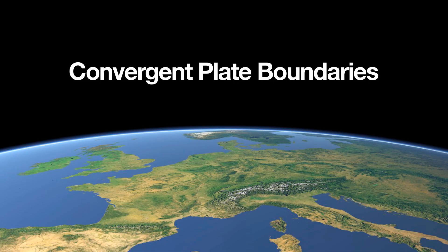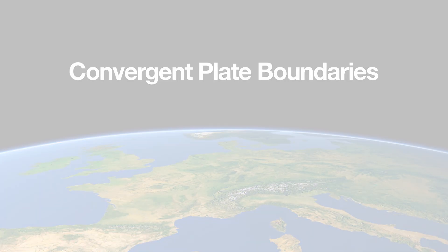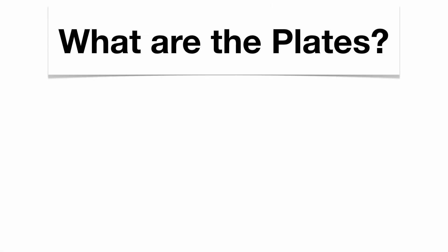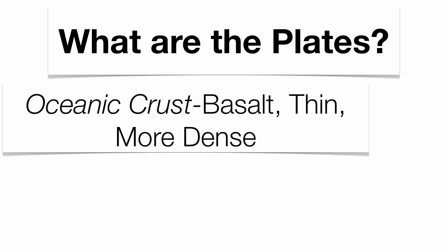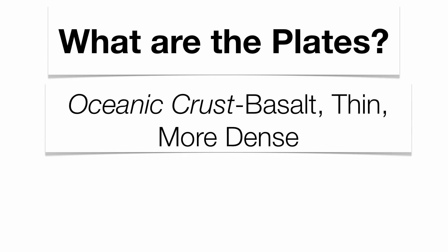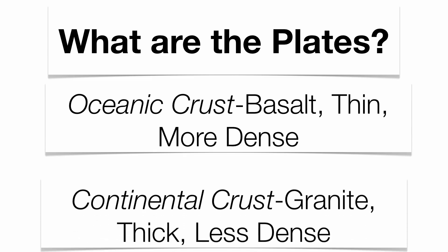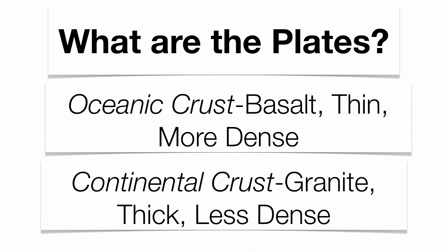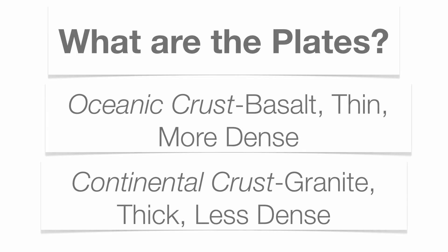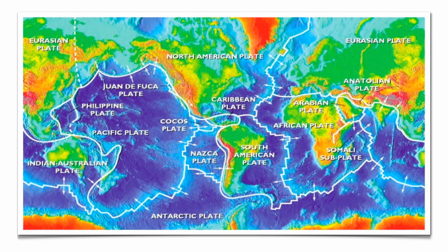In order to understand convergence, we've got to talk a little bit about the crust. Our crust, or our lithosphere, is broken up into different sections called plates. Our plates can either be made up of oceanic crust or continental crust. Please know the difference between the two, because when those two types of crust interact, they're either going to slide side by side, pull apart from each other, or in this case, crash together.